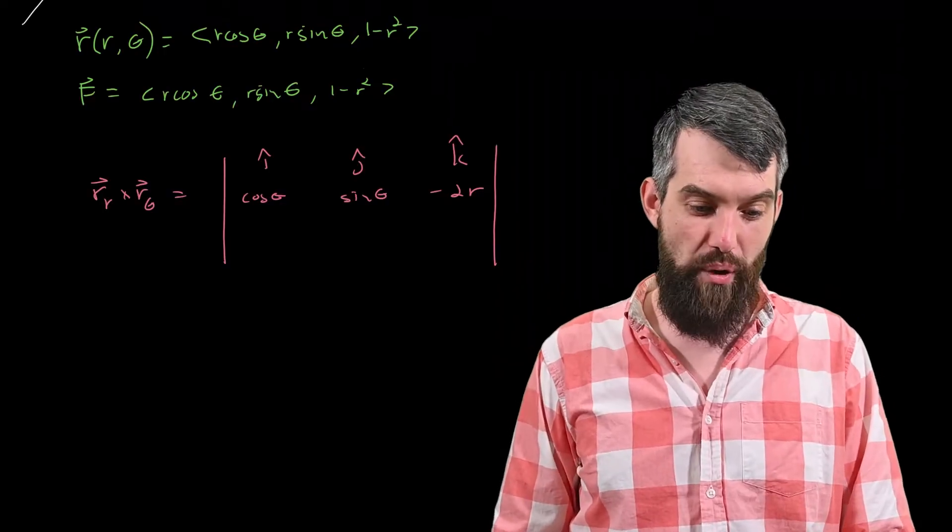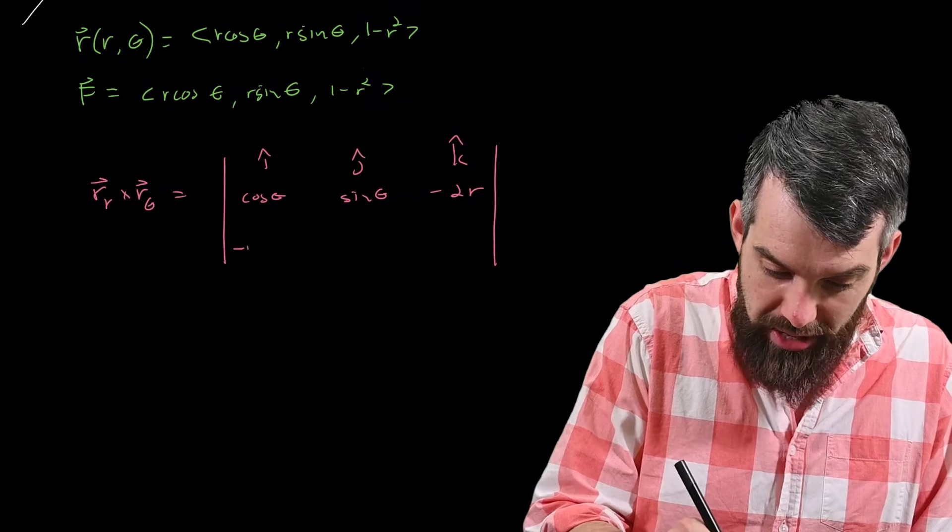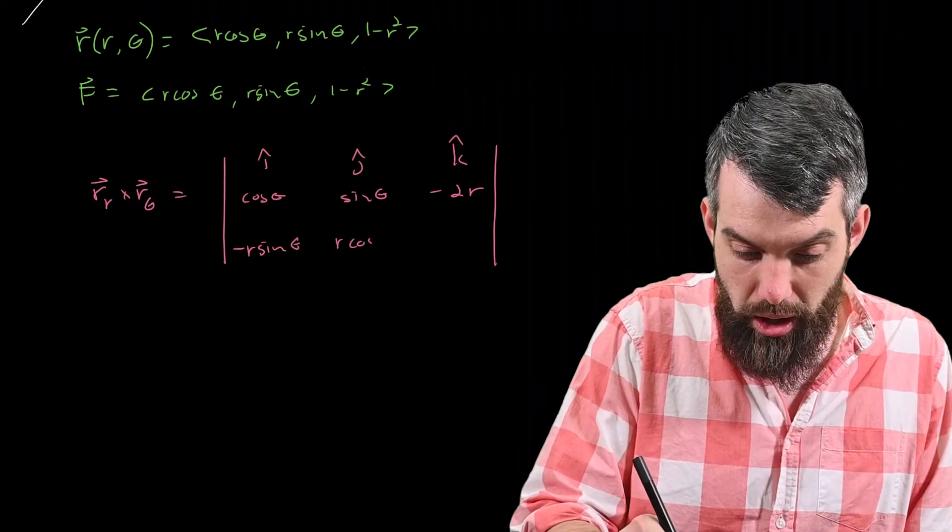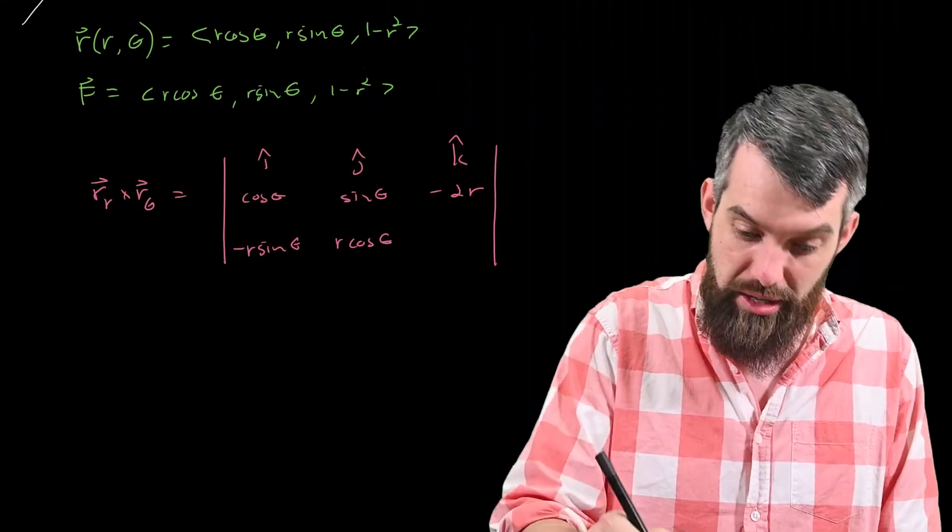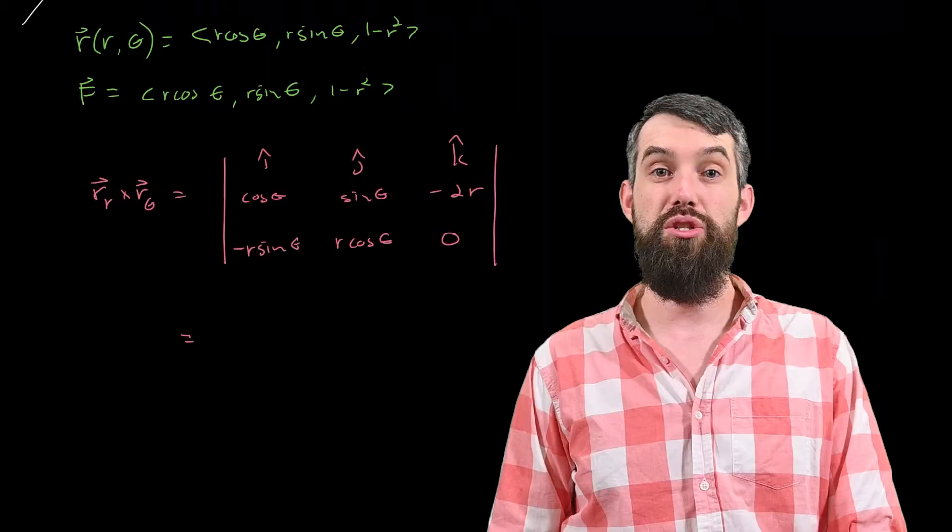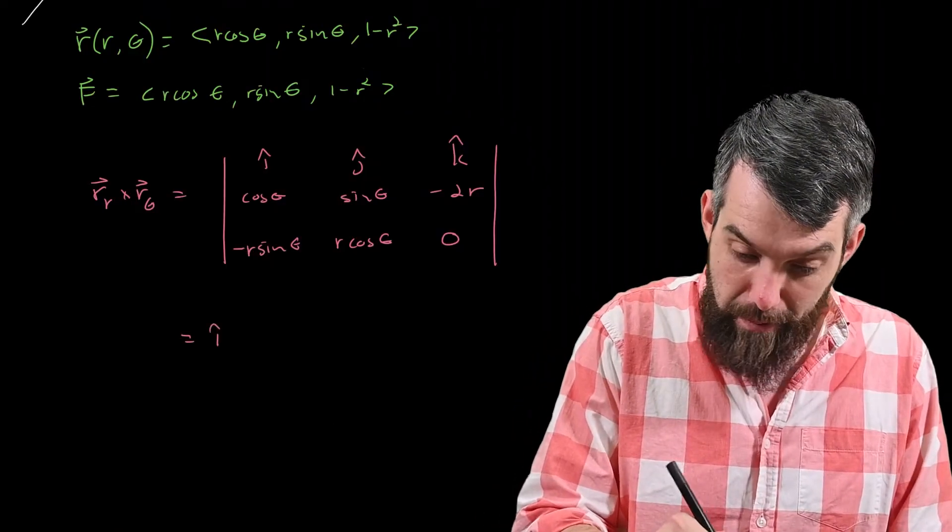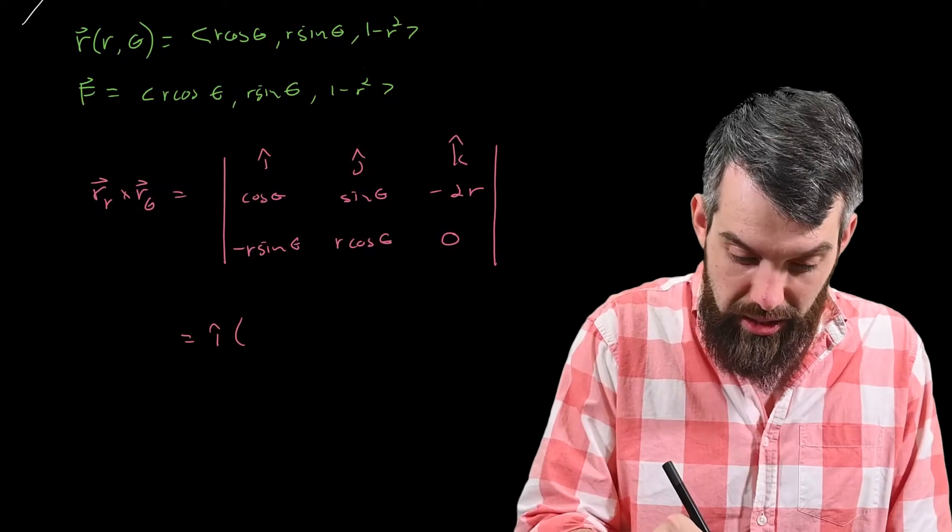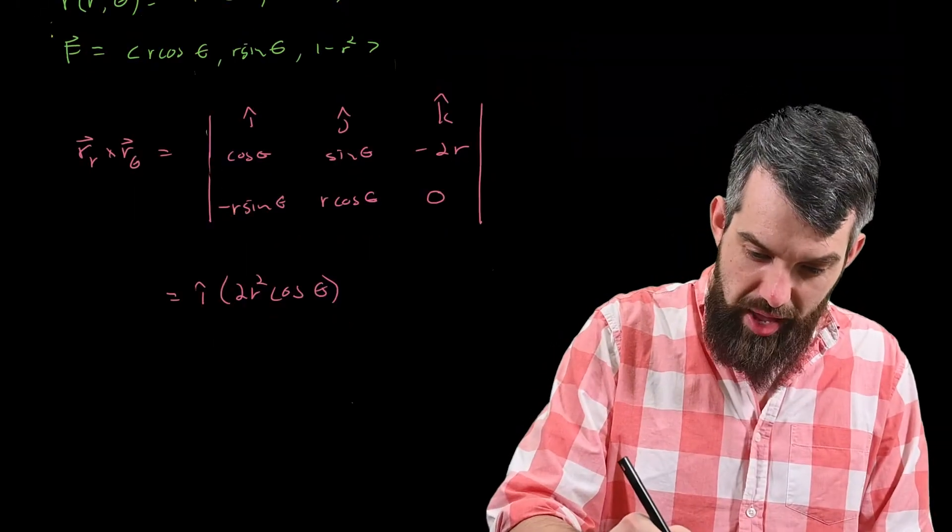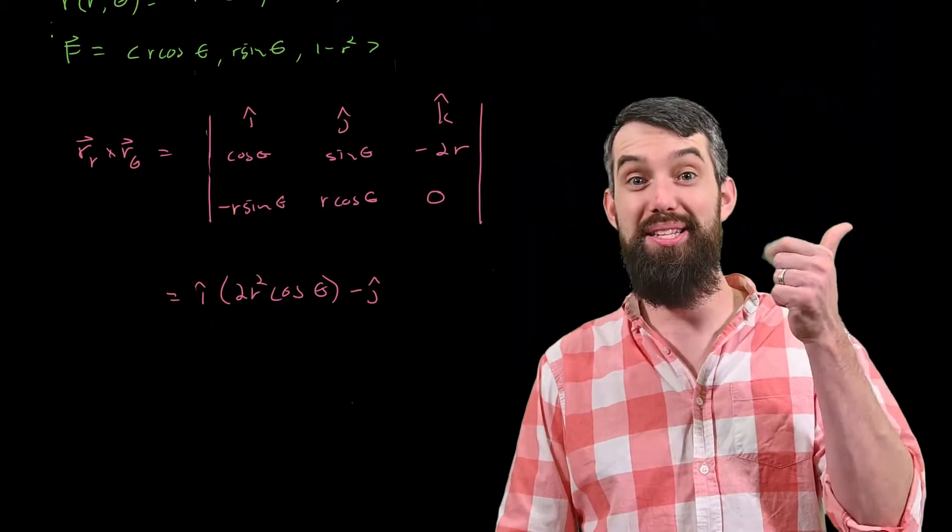Then for the third line, this is the partial with respect to theta. So I'm going to take a minus r sine of theta, and r cosine of theta, and then just a zero in that third component. This is straightforward to compute, so in the i-hat I'm going to have minus minus 2r squared cosine of theta. Then I have a minus j-hat, it looks like a minus minus minus, which is three minuses, makes one minus.